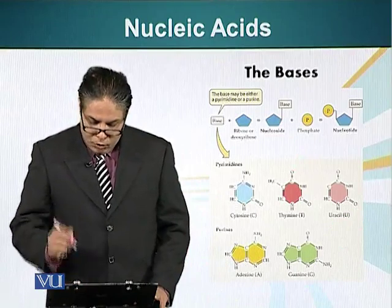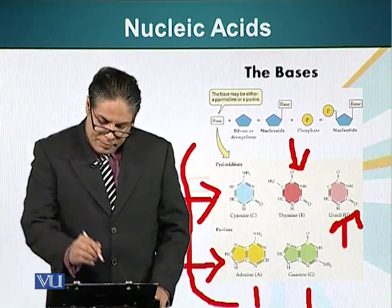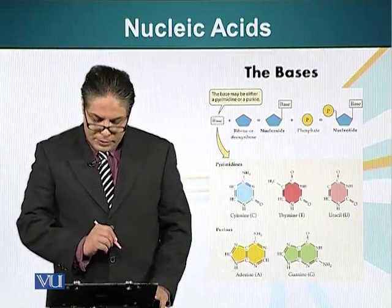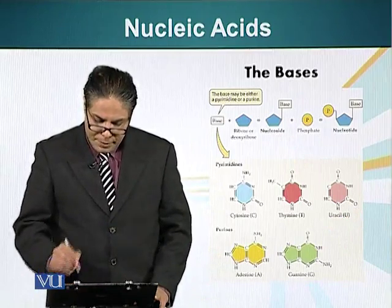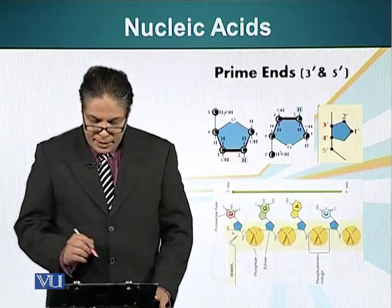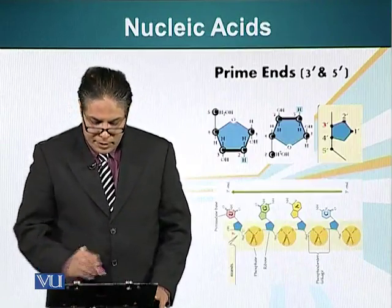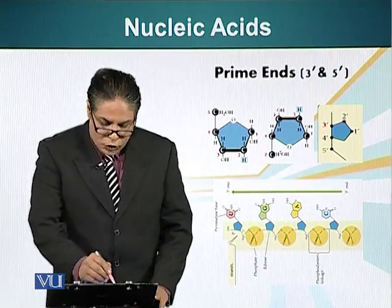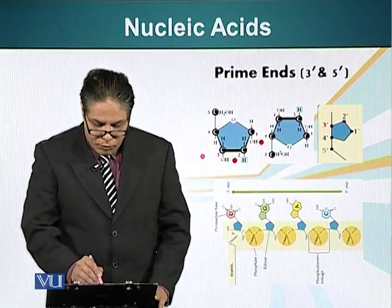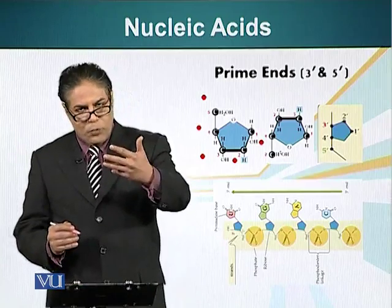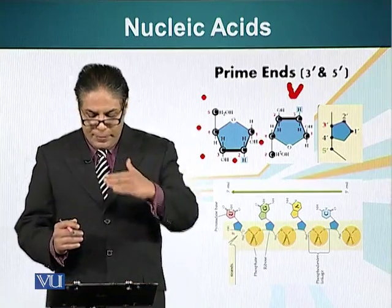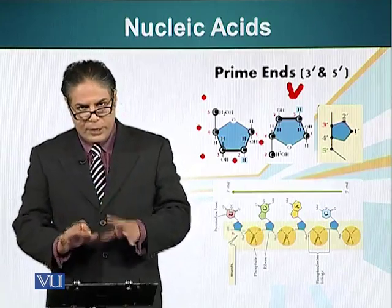The pentose sugar plays a very important role in the chemistry of nucleic acids. Here is the pentose sugar — the ribose. The carbon atoms in this ribose are numbered 1, 2, 3, 4, and 5. If you flip this molecule vertically, you get this structure — it is the same molecule but flipped. It is easier to look at nucleic acids with the pentose in this orientation.